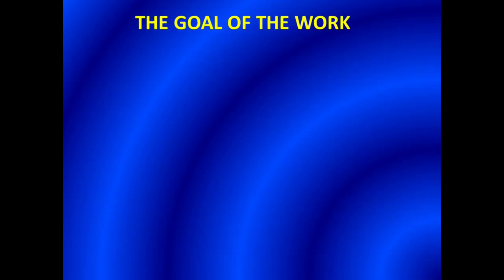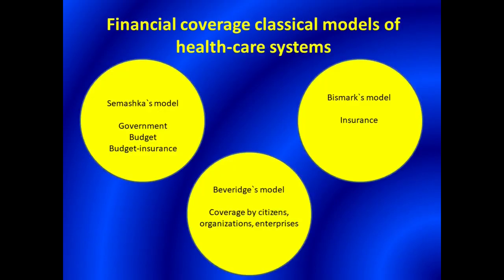The goal of the work is to investigate the features of boundary lines between hospitals' gravity zones. Overall, there are three financial coverage classical models of health care systems. In the Semashka model, financial coverage is generally made by government budget. In the Beveridge model, by citizens, organizations and enterprises.